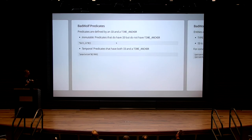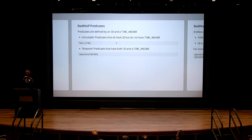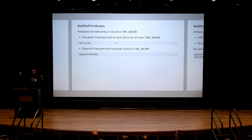How we model stuff in Bad Wolf: immutable predicates are represented with a bracket notation with no dates — meaning it's always true. Temporal predicates are measured with an anchor notation, containing what we call a time anchor — when that statement was anchoring in time. You can think of time as a line, and you anchor these statements along the line. At that point in the line, there was a statement that was true.